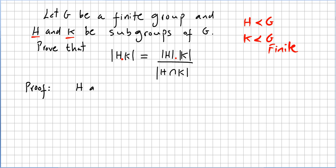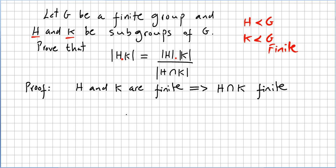We know that H and K are finite. Since these two are finite, H intersection K will be finite too. So the order of H intersection K, the order of that subgroup, will be some natural number N. Since H and K are finite, their intersection has to be finite.